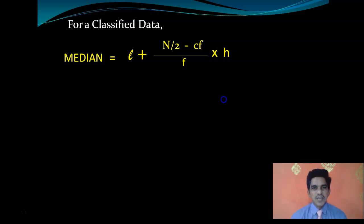For classified data, median is L plus N by 2 minus CF divided by F into H. We have five variables: L, N, CF, F, and H. We'll take one at a time. L is the lower boundary of median class.